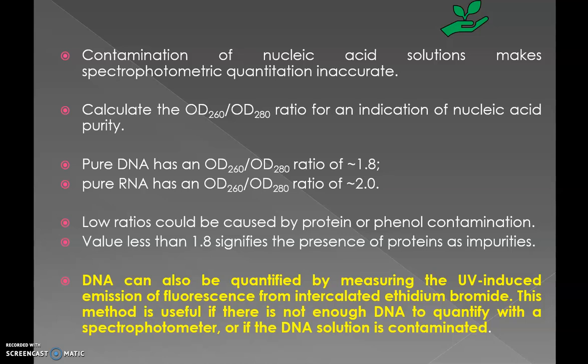DNA can also be quantified by measuring the UV-induced emission of fluorescence from intercalated ethidium bromide. This method is useful if there is not enough DNA to quantify with a spectrophotometer, or if the DNA solution is contaminated.